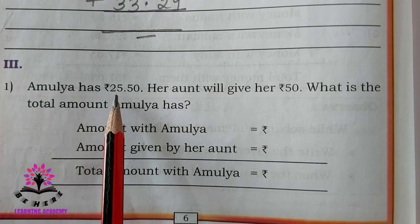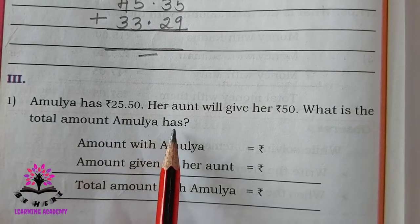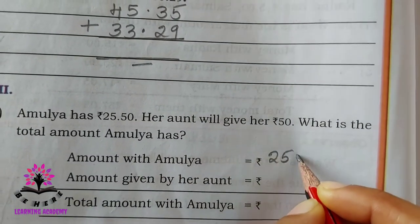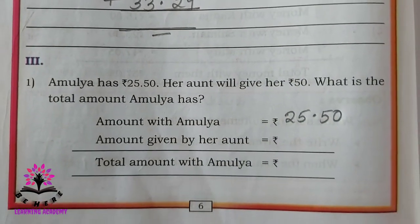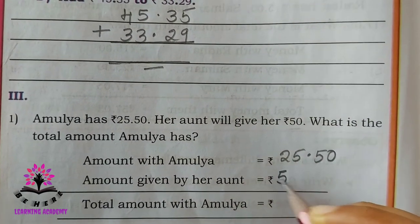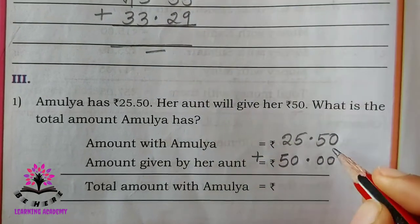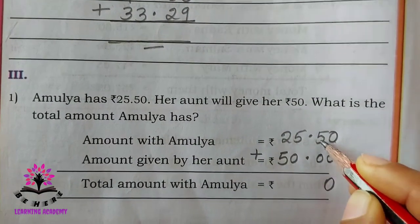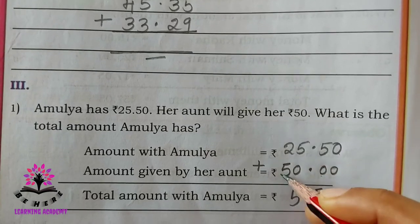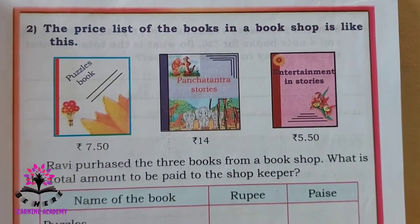Word problem: Amulya has 25 rupees 50 paisa. Her aunt will give her 50 rupees. Since only rupees are given for the aunt's amount, paisa is written as 00. To find the total amount with Amulya, you have to add: 0 plus 0 is 0, 5 plus 0 is 5, 5 plus 0 is 5, 2 plus 5 is 7. So the answer is 75 rupees 50 paisa.